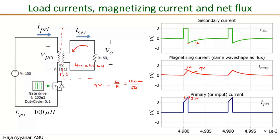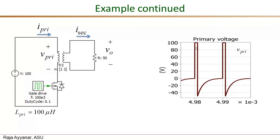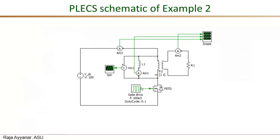The output voltage is simply the secondary current times the 50 Ω resistance. During the on interval: 2 A × 50 Ω = 100 V, consistent with the 1:1 turns ratio applying 100 V to the secondary. At the turn-off instant the current is −1 A, giving −50 V, and then it decays exponentially back to zero before the next turn-on. The simulation output voltage waveform shows exactly this: 100 V during the 1 μs on interval, dropping to −50 V at turn-off, then exponential decay to zero.